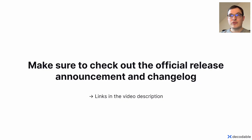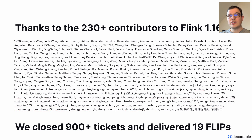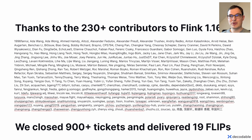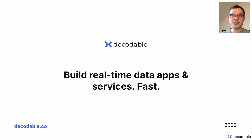Please check out the official release announcement on the Flink blog and also the changelog if you want to know what breaking changes were introduced in this release. Finally, I'd like to thank all the 230 or more contributors to Flink 1.16. We closed over 900 tickets in this release and delivered 19 Flink improvement proposals. Thanks a lot — I'm looking forward to any feedback around the new Flink 1.16 release.